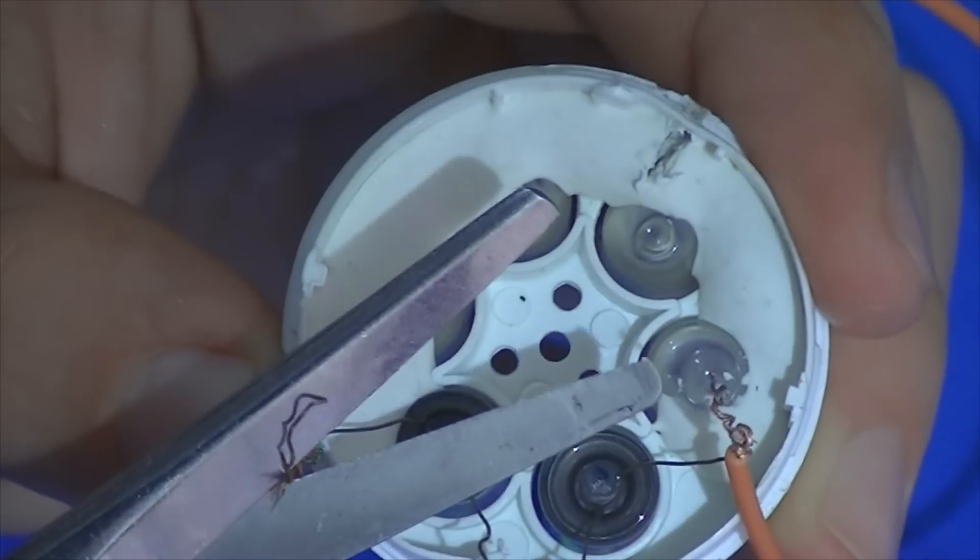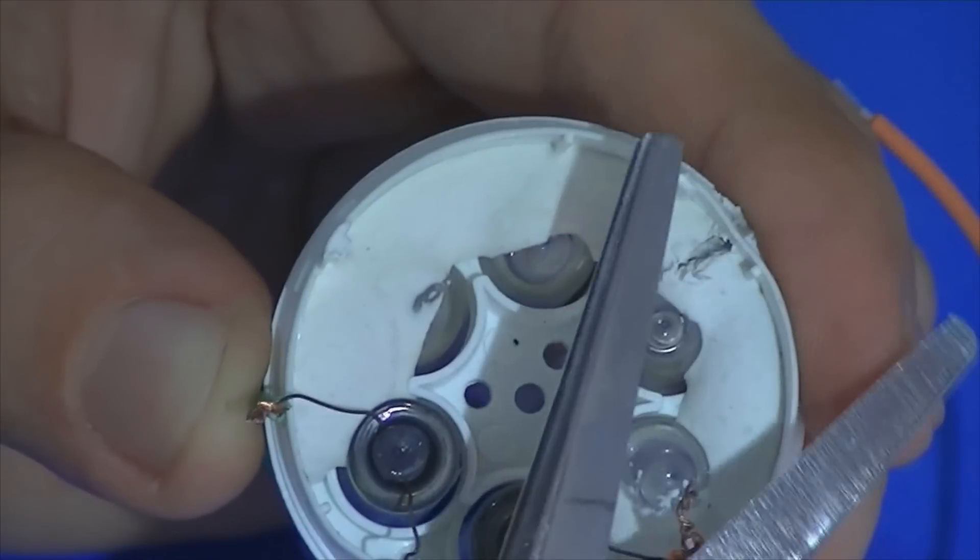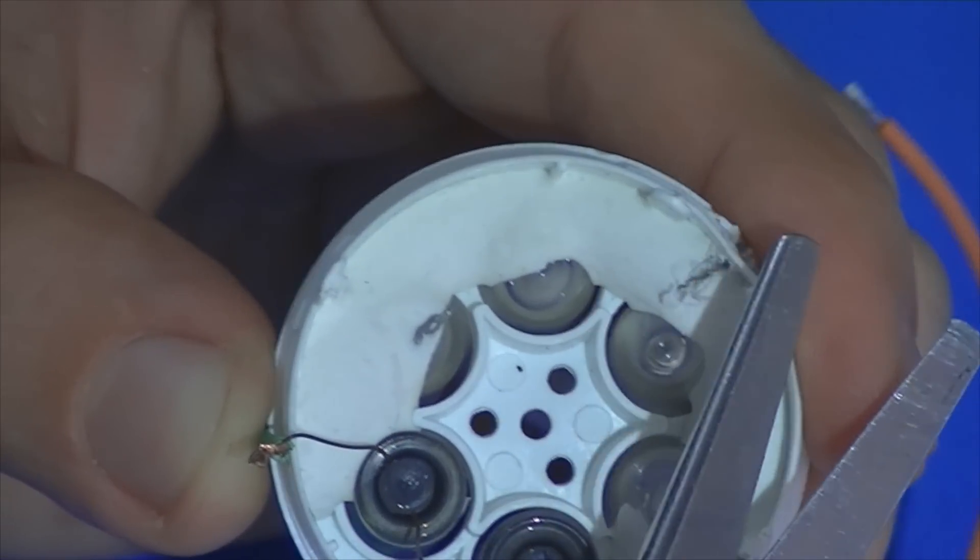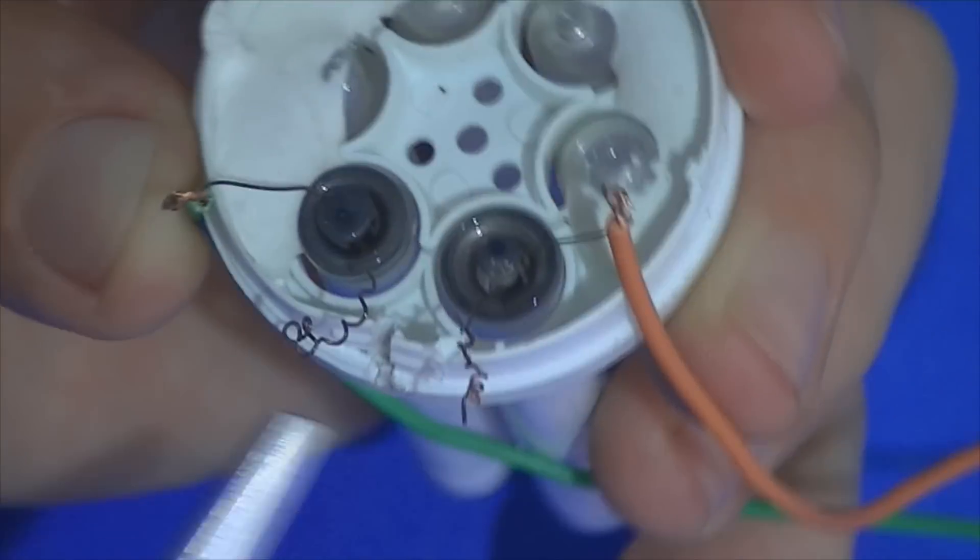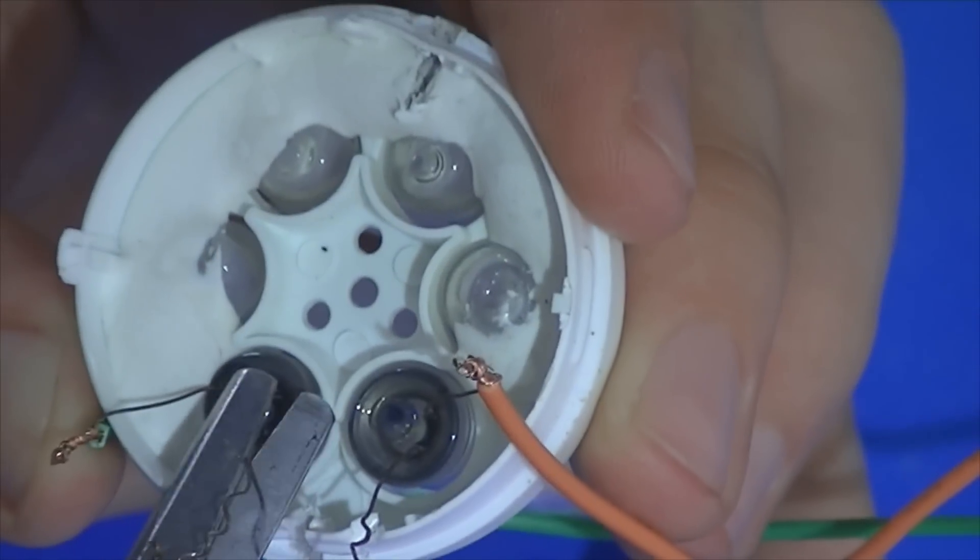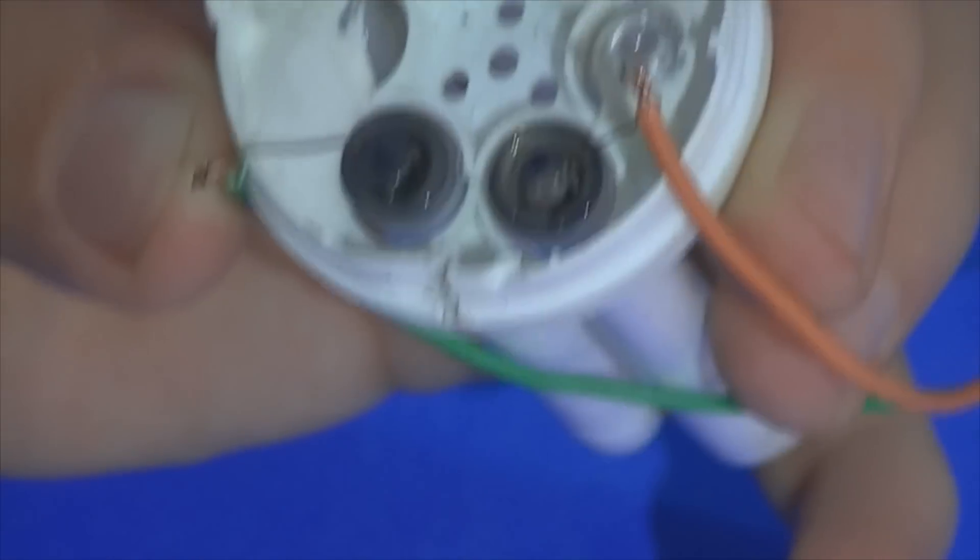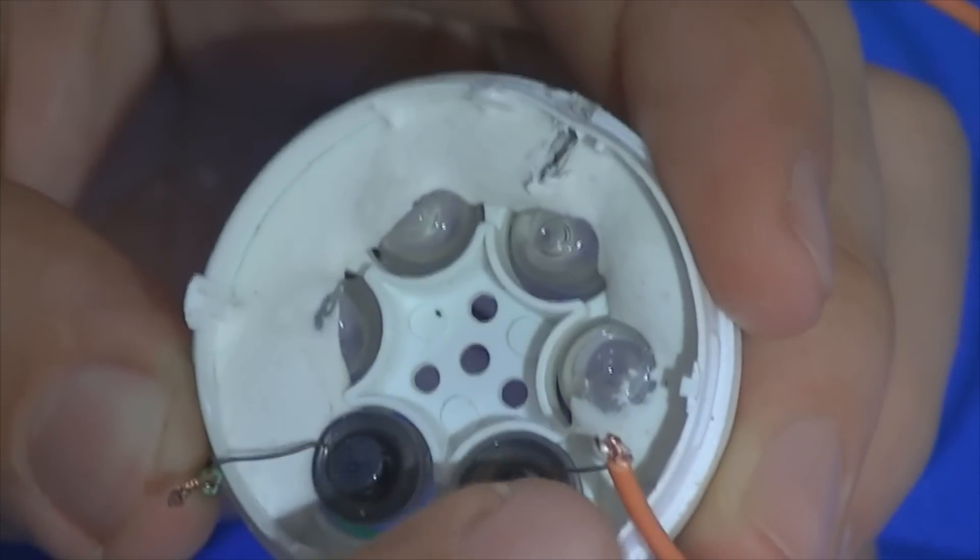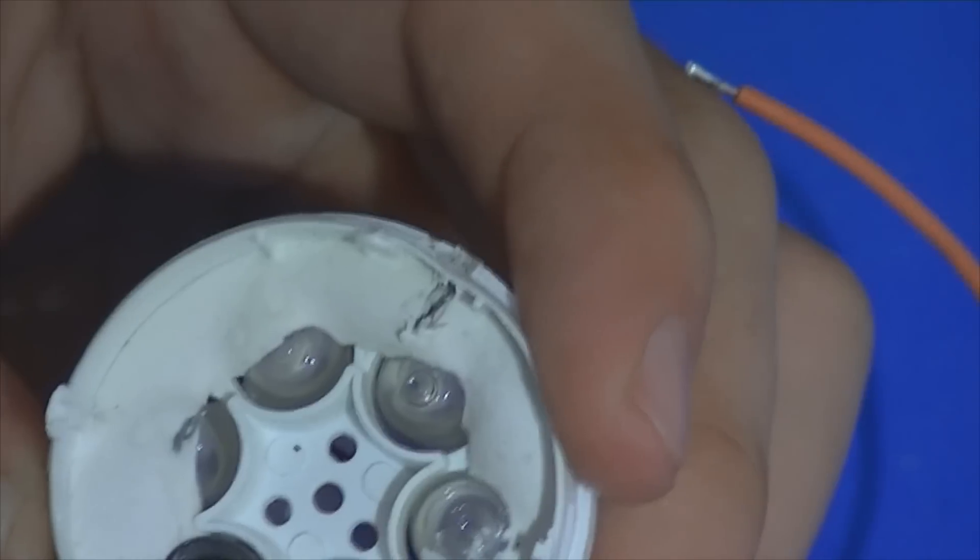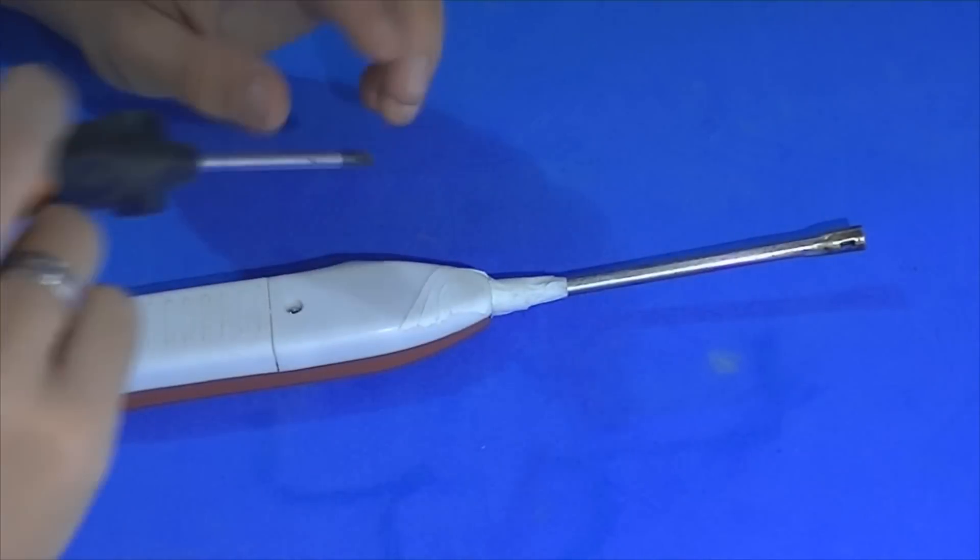Aqui podemos cortar o excesso, cortar o excesso aqui do outro lado também, e o filamento que a gente não utilizou podemos cortar ele. Beleza? Pegamos um pedacinho de fita isolante e isolamos essa emenda que a gente fez.